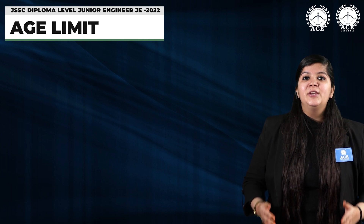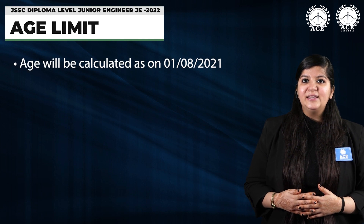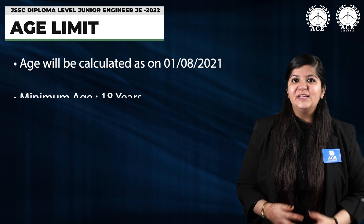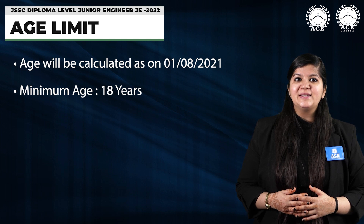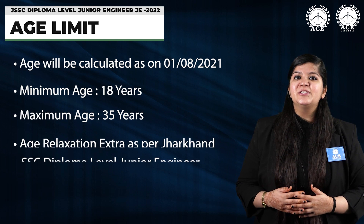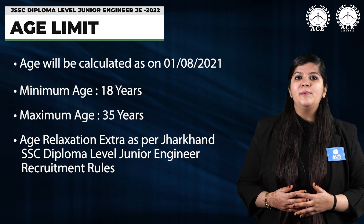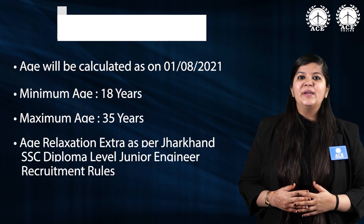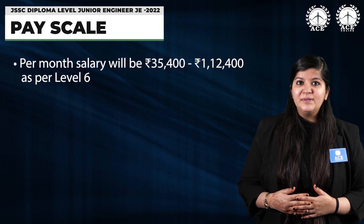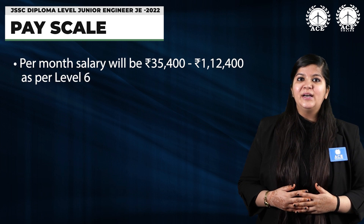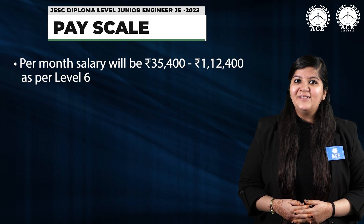Now let's look at the age limit. Your age will be calculated as on 1st August 2021. The minimum age required is 18 years and the maximum age limit is 35 years. Age relaxations will be provided as per the norms by Jharkhand Staff Selection Commission. Regarding remuneration and pay scale, you will be appointed at a monthly salary of ₹35,400 to ₹1,12,400.